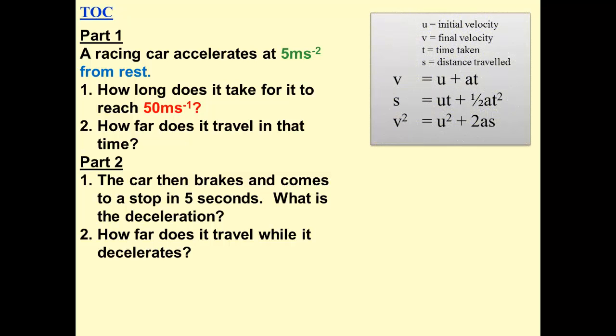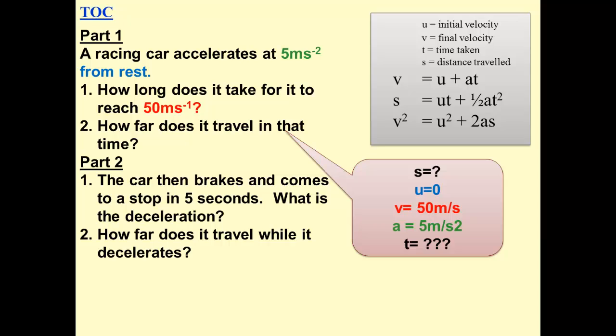These are the equations, the Suvatt equations. We need to find out the distance in part two. U is equal to 0 because it starts from rest. We know the final velocity is 50. We know the acceleration is 5 meters per second squared. How long does it take? So basically we need to find T.